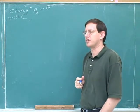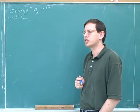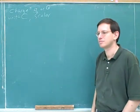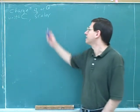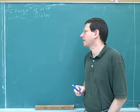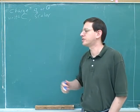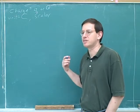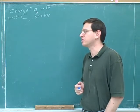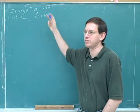Is charge a vector or a scalar? Charge does not have a direction — no. A scalar is something with no direction and a vector is something that does have a direction. Charge is a scalar because you would never say something has a charge of positive five coulombs north — that doesn't make sense. A lot of students mistakenly think scalars don't have signs; that's not true. A scalar can be positive or negative, it just can't have a direction. Charge is a scalar that could be either positive or negative.